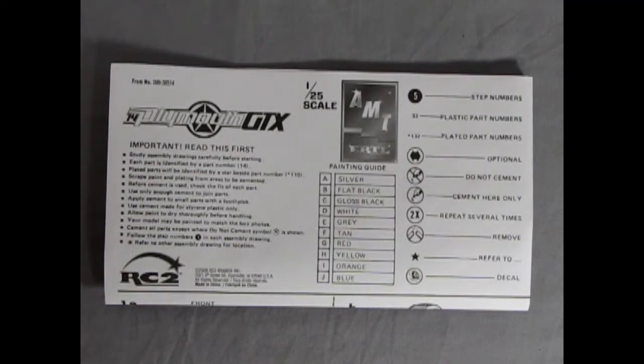Our instruction sheet is the fold-out variety and includes a painting guide as well as instructions as to what the symbols mean. This kit was originally released in 1973 and was modified in 1974 and included a police version back in the day.